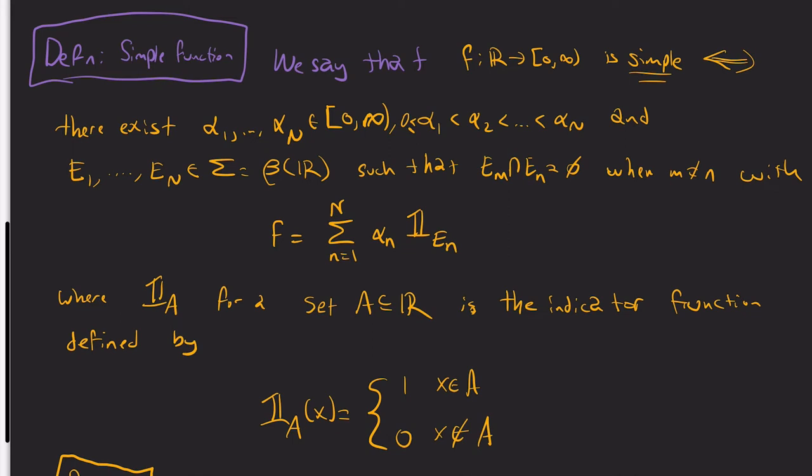Now I'm ready to define what is called a simple function. We say that a function f - and I forgot to mention in the last video, when we talk about Lebesgue integration, at least for now, we're talking about non-negative functions. So we map into the non-negative reals for now, and then at the end we'll get into what if I map into negative numbers. A function is simple if and only if its range is finite.